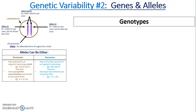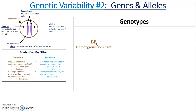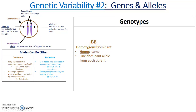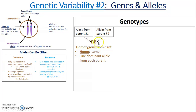A bit more about genotypes. If we have capital B capital B, this is called homozygous dominant — homo meaning same — and both capital letters indicate a dominant phenotype. Each letter represents one allele, one from each parent. Parent one gave a capital B (brown eye color allele) and parent two also gave a capital B, so the child has this genotype and will have brown eyes.